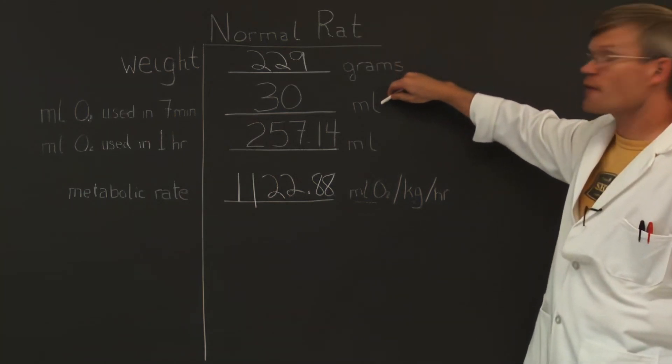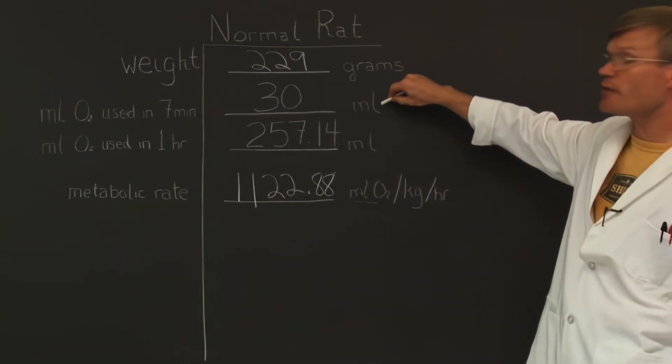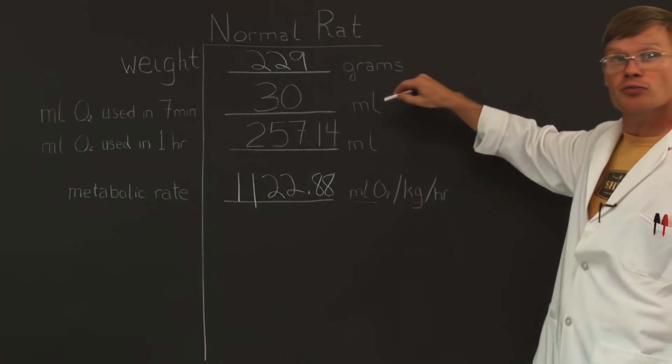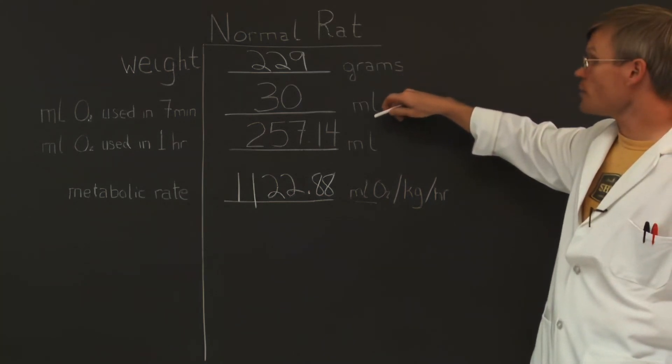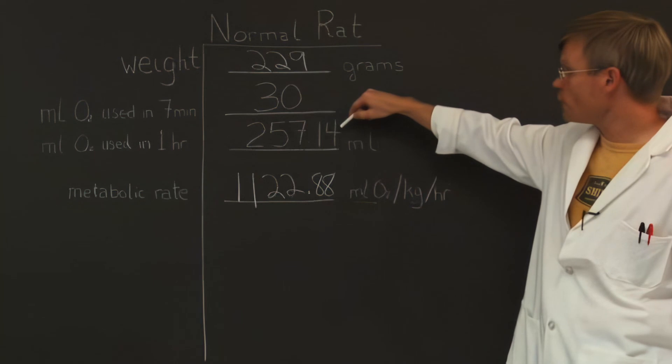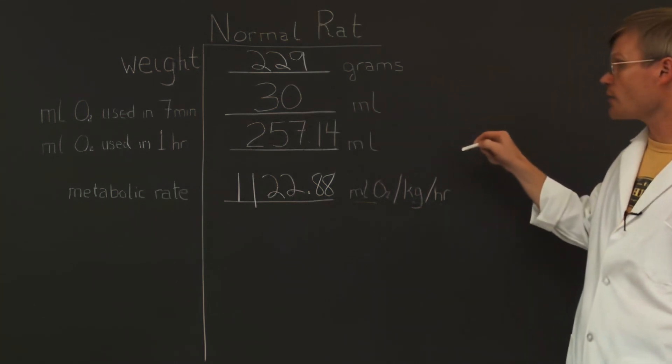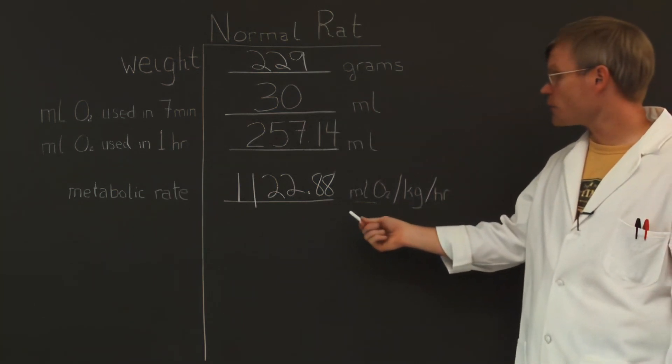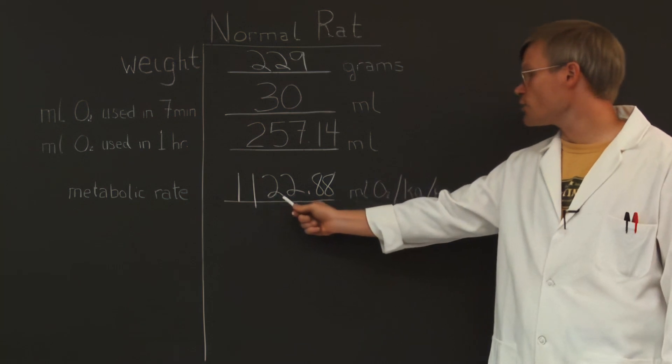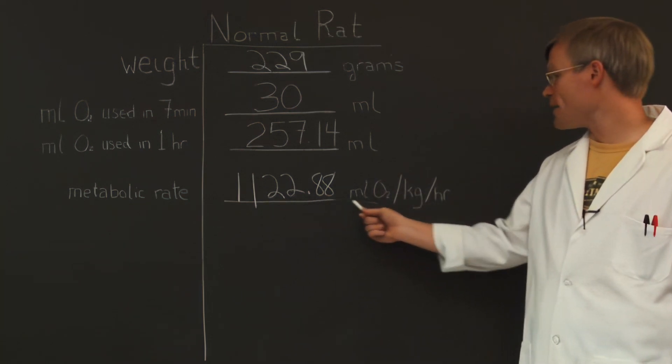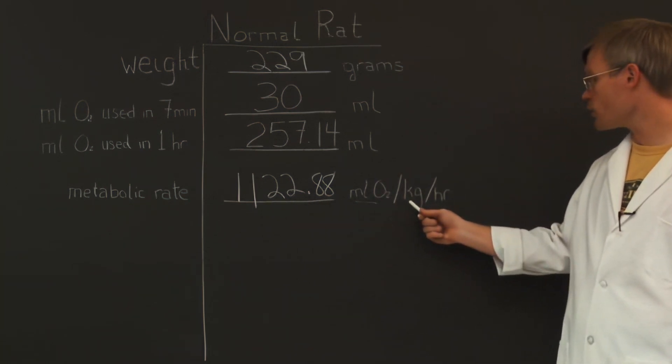Previously, we determined that 30 mils of oxygen were consumed in 7 minutes. We then determined that per hour, that is 257.14 mils of oxygen per hour, which gives us a metabolic rate of 1,122.88 mils of oxygen per kilogram per hour.